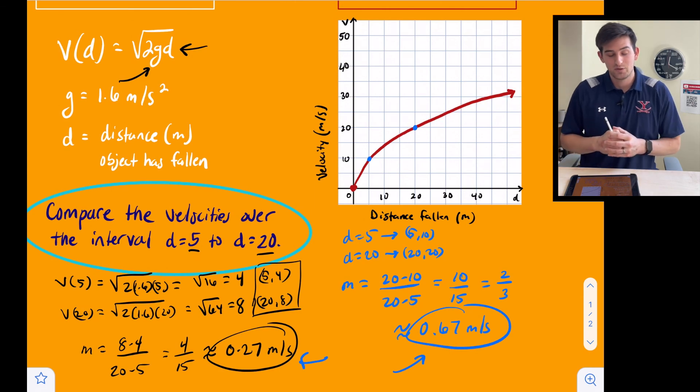This is an example of how we can compare average rate of change on two square root functions.